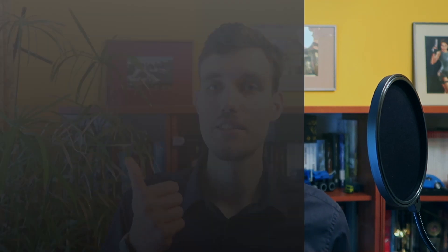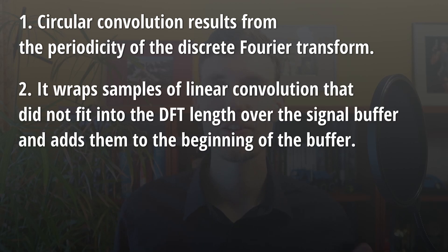To summarize, in this video we looked at circular convolution. Circular convolution results from the periodicity of the discrete Fourier transform. Circular convolution wraps the samples of the linear convolution that did not fit into the transform's length over to the beginning of the buffer. If we want to extract valid samples of the linear convolution, this wrapped around samples need to be discarded.